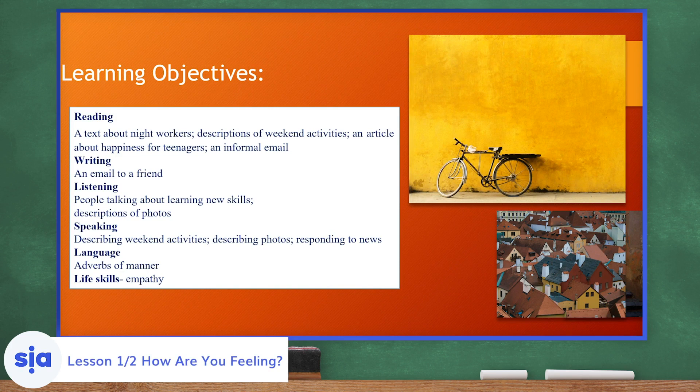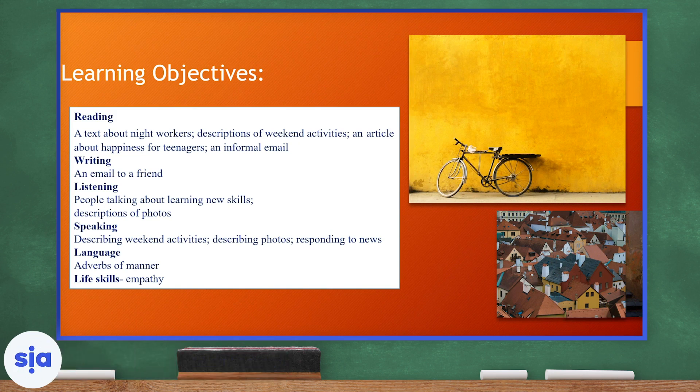We're going to be reading a text about night workers, descriptions of weekend activities, an article about happiness for teenagers, and an informal email. Then we're going to be writing an email to a friend. We're going to be listening to people talk about learning new skills and descriptions of photos. And we're going to be practicing describing weekend activities along with photos and responding to news. Our language focus is adverbs of manner and our life skills are empathy.